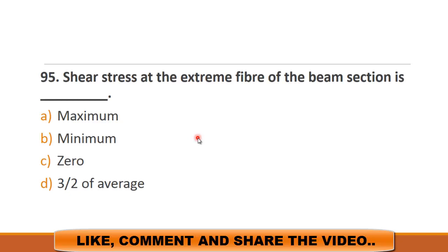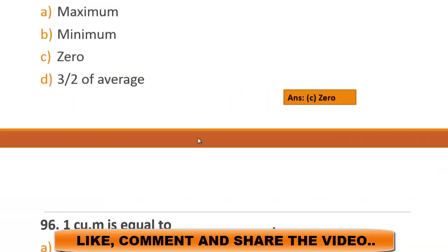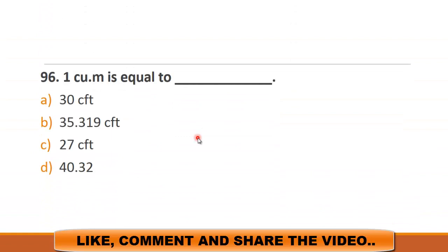MCQ number 96 is: one cubic meter is equal to. a) 30 cubic feet, b) 35.319 cubic feet, c) 27 cubic feet, and d) 40.32 cubic feet. So the right answer is b) 35.319 cubic feet.